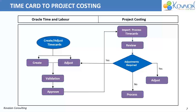This is exactly how Time and Labor and Project Costing works. When we create the time cards, they go to the validation process. From the validation process, the project manager will approve the time cards. Once approved, the cost will not be automatically transferred to Project Costing — we have to run a separate process called the Import Process, which transfers the hours from OTL to Project Costing.